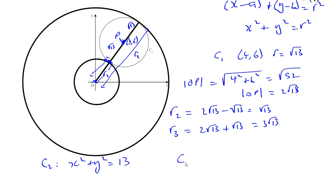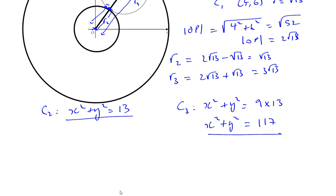So for C3, it's going to be x squared plus y squared is equal to 9 times 13. Because 3 squared is 9, root 13 squared is 13. That's 90 plus 27, so that's going to be 117. x squared plus y squared is equal to 117. So that's your answer for C2 and C3, the equation of the circle.